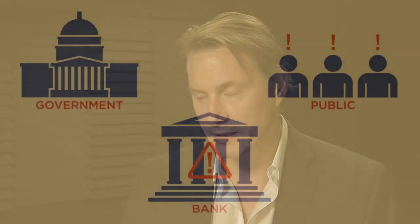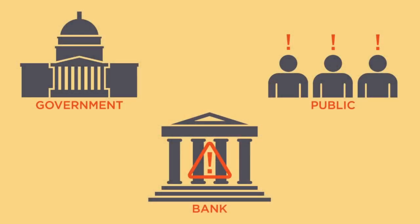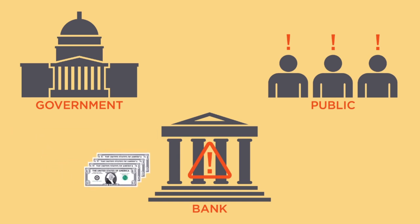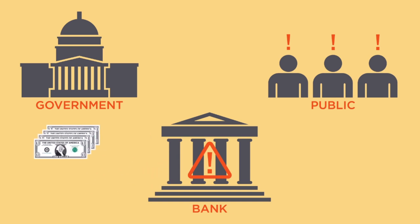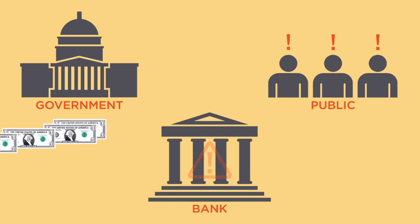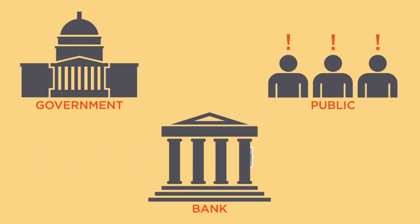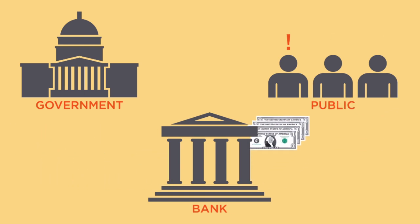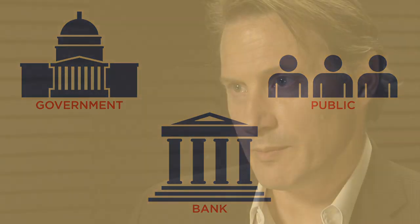These events have occurred in the past, and they've created great disruptions in the payment system and exacerbated recessions into much larger economic contractions. Under a fiat money system, the government is free to create money and to lend it out temporarily to these distressed banks, so that they can give it to the people who want to withdraw their money, thereby accommodating the temporary elevated demand for money.